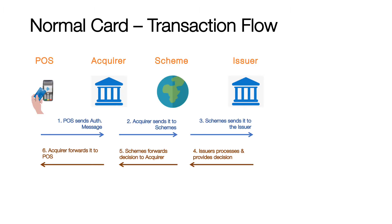As we all know, whenever we use a chip card at a POS terminal, the transaction gets sent to the acquirer, who further sends it to schemes and further to the issuer. The issuer is the main party here who takes the decision on authorization — the issuer takes care of all the cryptogram checks, account status checks, card status checks, open-to-buy, everything — and then sends the decision back to schemes, who further send it to the acquirer and then to the POS.